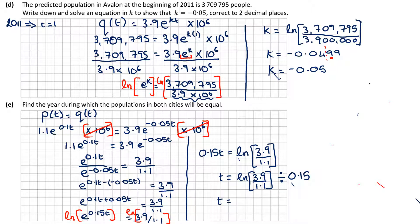Working that out gives T ≈ 8.44 years. But the question asks for the year, not the number of years. Adding 8.44 to 2010 gives 2018. So during 2018, the populations of both cities will be equal.